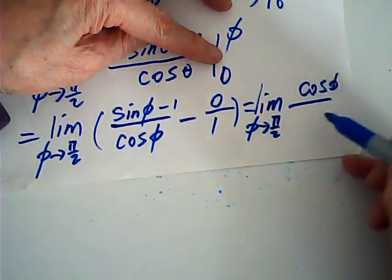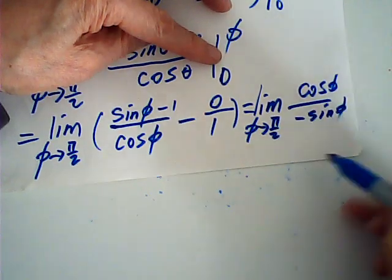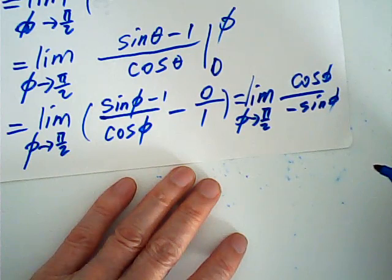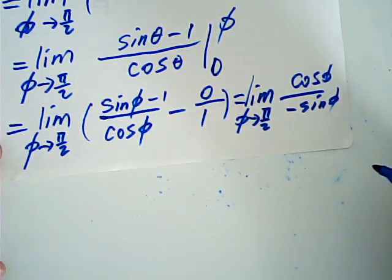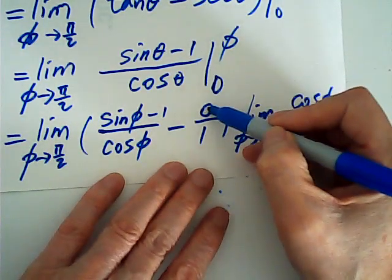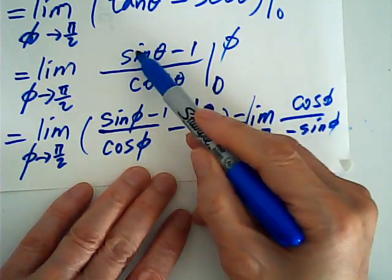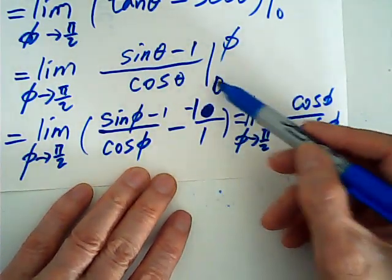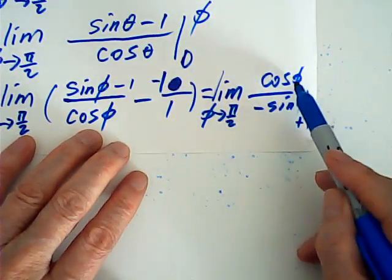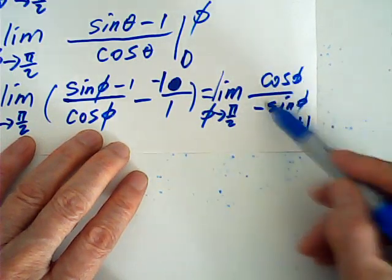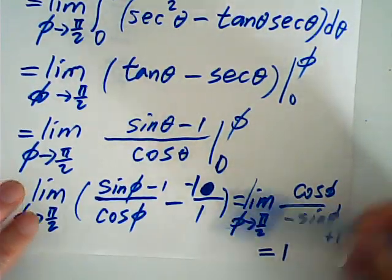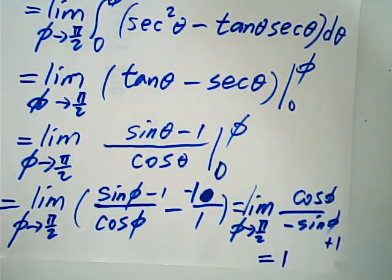Applying L'Hôpital's rule as φ → π/2: the numerator sinφ − 1 differentiates to cosφ, and the denominator cosφ differentiates to −sinφ. Actually, sinφ − 1 at φ = 0 is −1, not 0 — that's a correction. So we have −1 in the numerator correction, and taking the limit: cosine of π/2 is 0, so the first term vanishes, and the result is 1. So the result by Method 1 is 1.